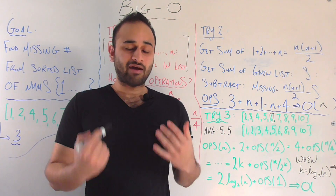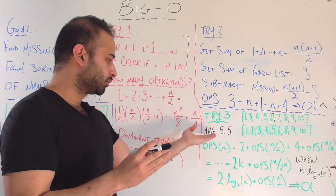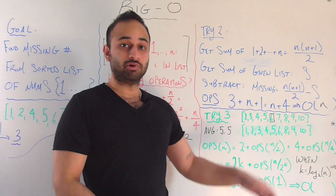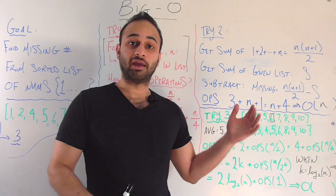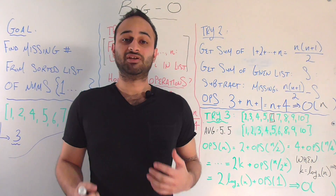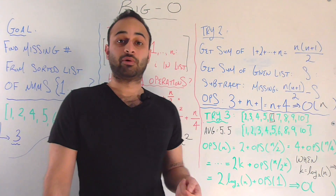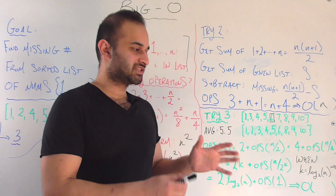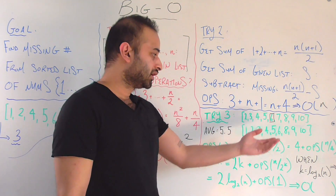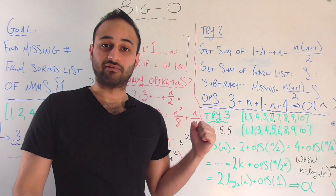What would the average of this list be if nothing was taken out? The average would be 5.5. The fact that six — the middle element of the new list — is bigger than 5.5 tells me that the missing element must come from the left-hand side. Mathematically, when you take away a smaller element, the median goes up. Therefore, the missing element must come from the left-hand side of the list.